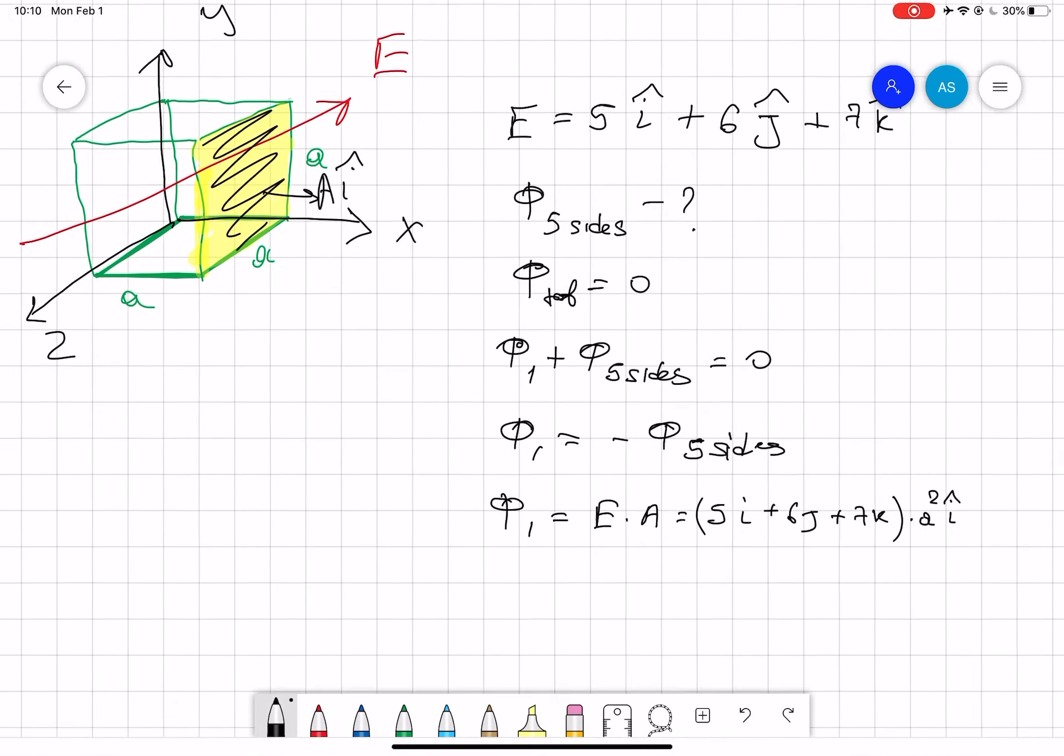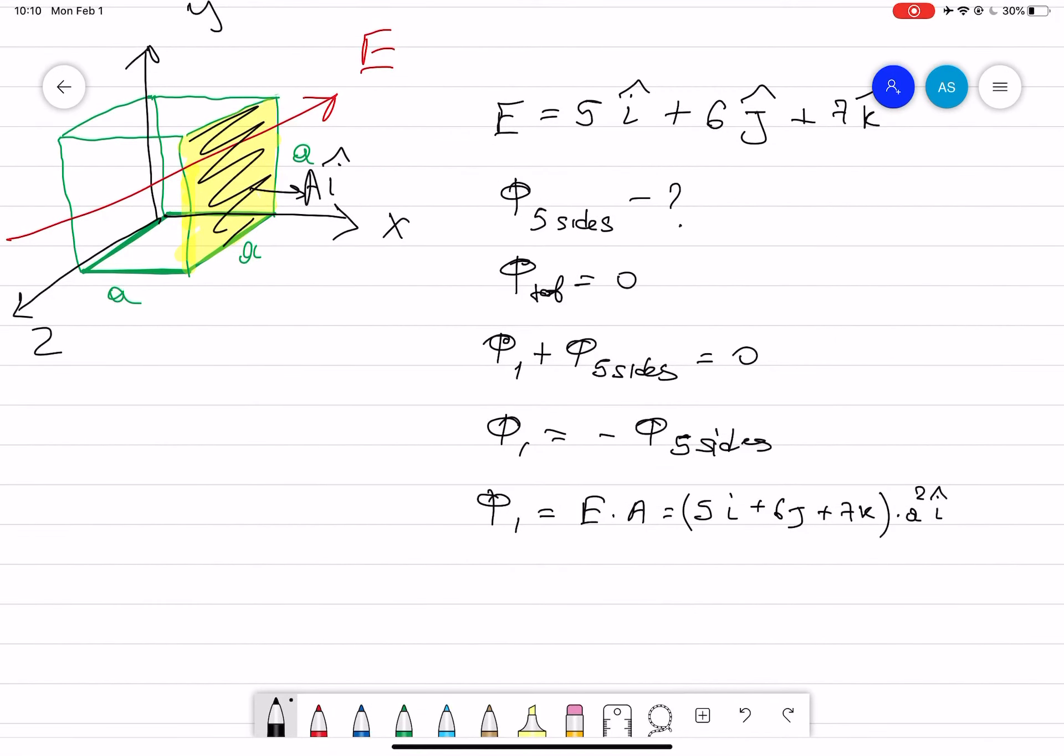We know that i times i gives you one, i times j gives you zero in the dot product. Therefore, flux one equals 5 times a squared. Now let's say a is equal to one. That means 5 times one squared, which gives you five.